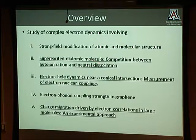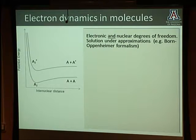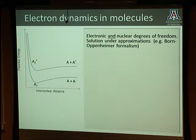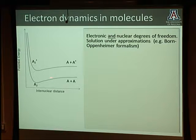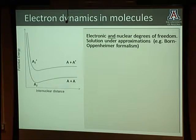Let's start with diatomic molecules. If you have an electron and two nuclei, solving the problem is difficult because nuclei are moving while you're trying to solve for electronic energies. What saves us is that nuclei are heavier, so we use the Born-Oppenheimer approximation, which says you can assume nuclei are frozen, fix an internuclear distance, solve for electronic energies, repeat at another distance, and obtain a potential energy curve. This works fine for ground and low-lying states.